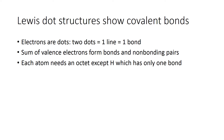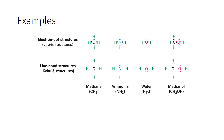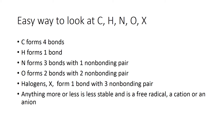In Lewis dot structures, everything should have an octet except hydrogen, which always has just one bond. Carbon has four bonds, nitrogen has three bonds and one non-bonding pair, oxygen has two bonds and two non-bonding pairs, and halogens (symbol X) have one bond and three non-bonding pairs. Anything less than or more than these standard arrangements is going to be unstable.